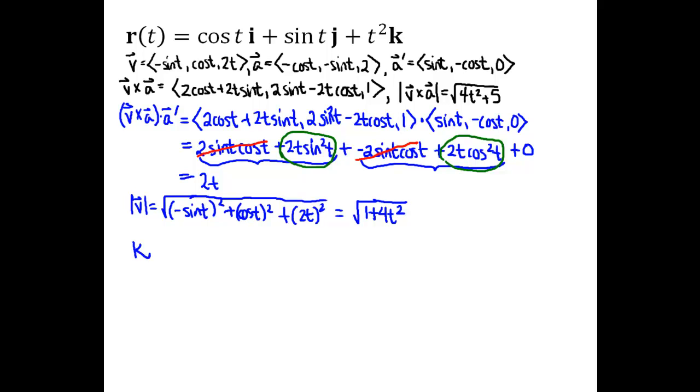So we're ready to write down our curvature and torsion answers. So the formula we chose to use for curvature was magnitude of V cross A divided by the magnitude of V cubed. So magnitude of V cross A we had calculated on the previous screen. It's written up there in black at the top of this screen. Square root of 4T squared plus 5. And then the denominator, magnitude of V cubed. So that'll be the square root of 1 plus 4T squared cubed.